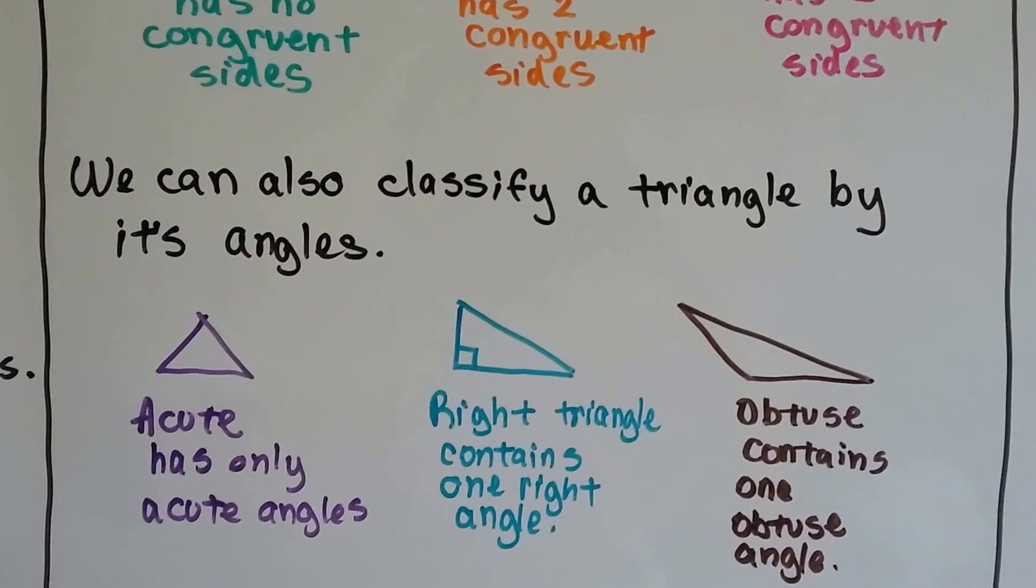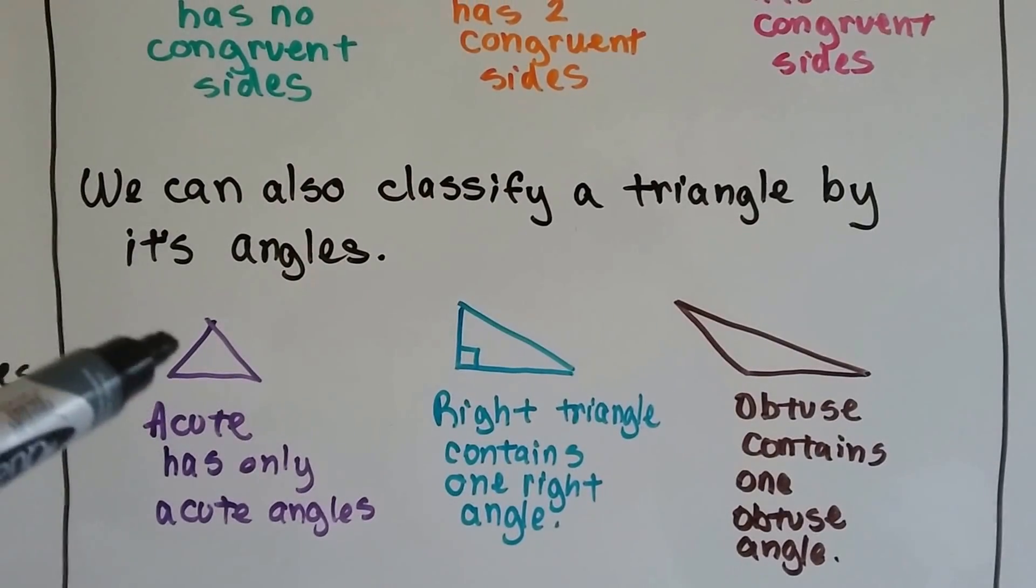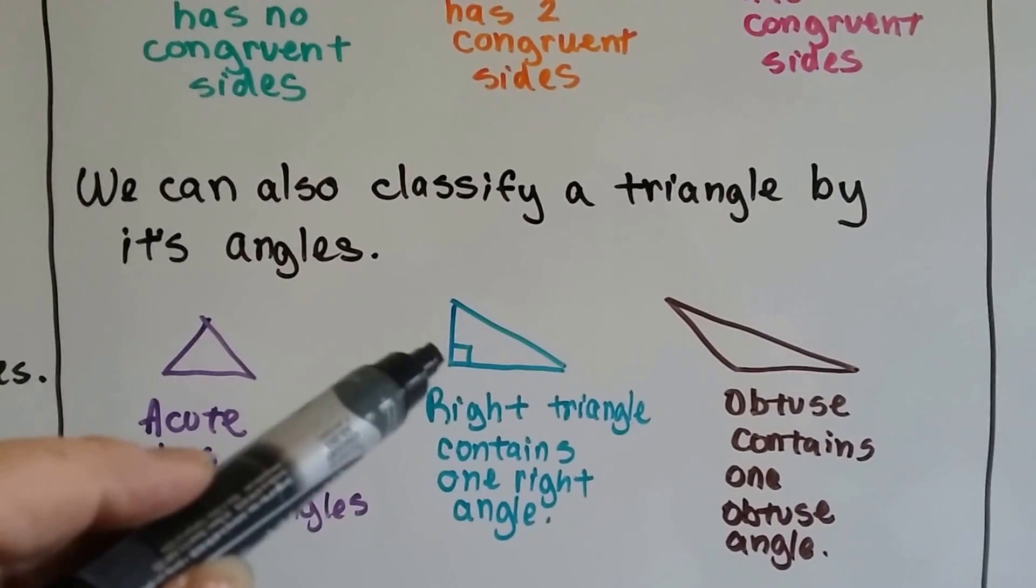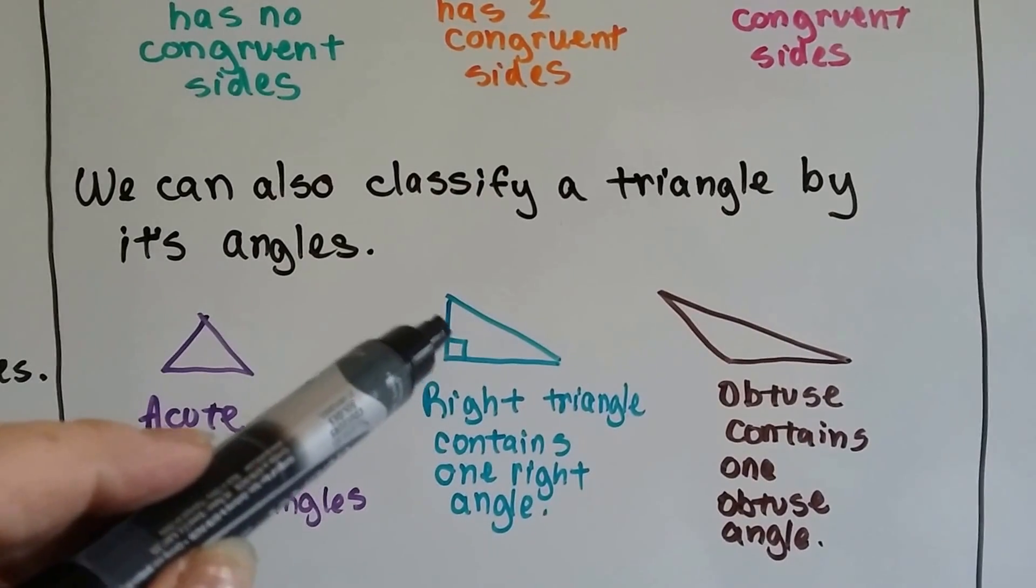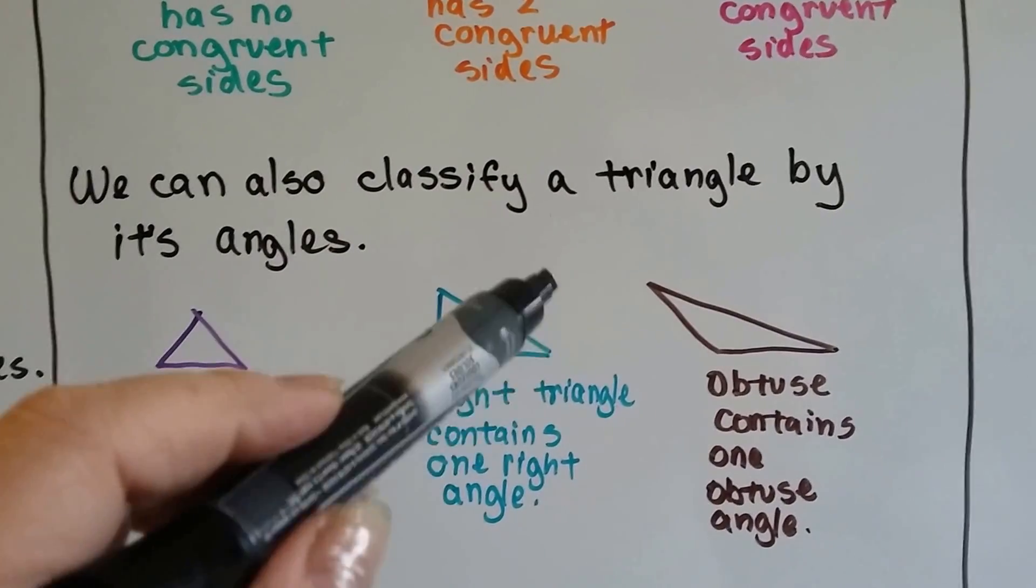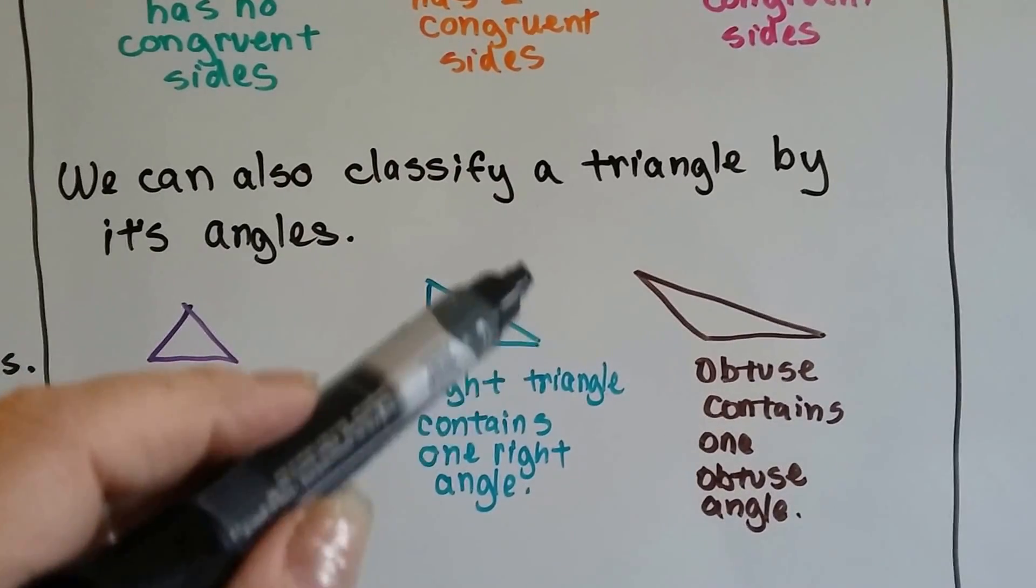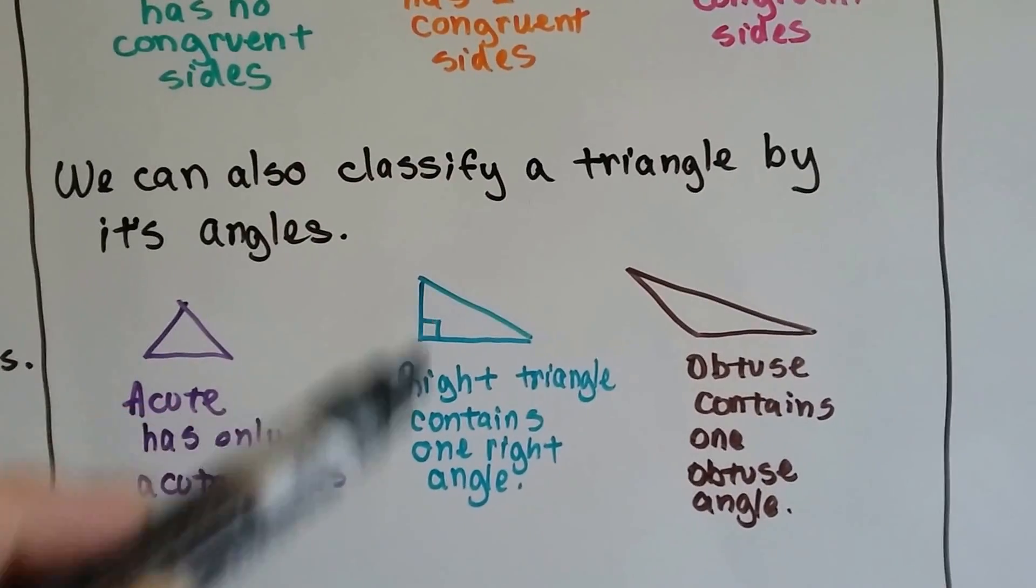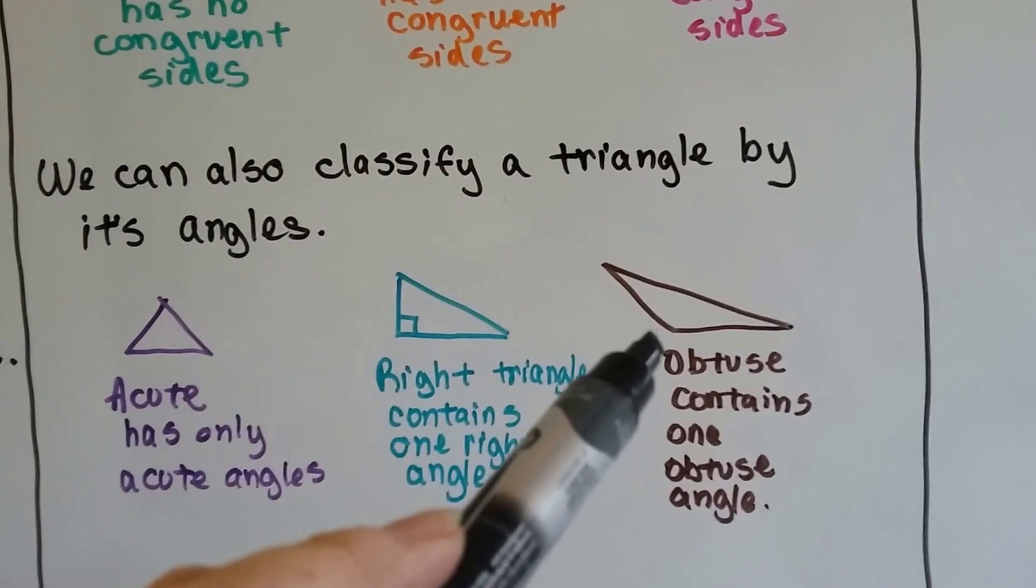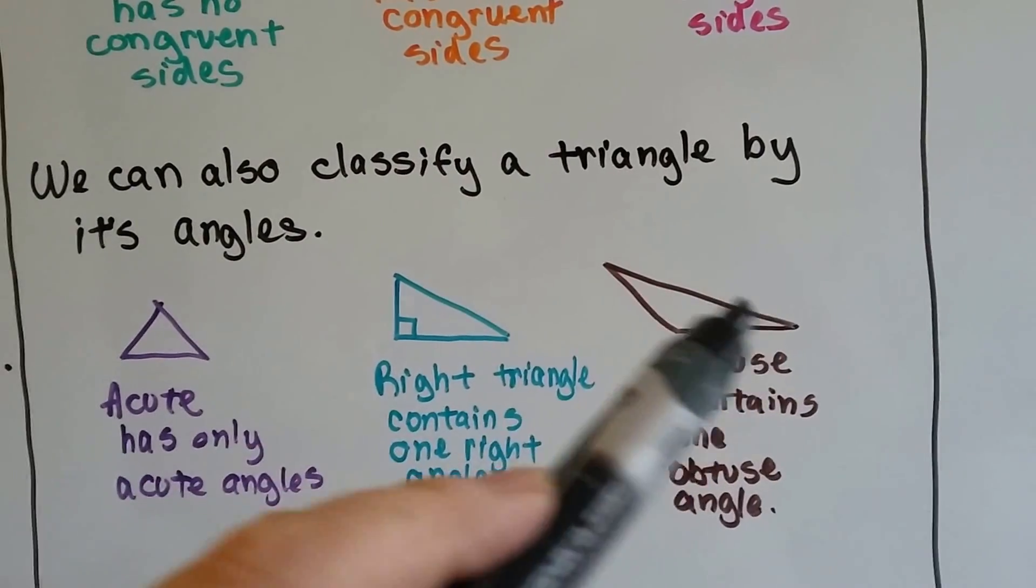We can also classify a triangle by its angles. If it only has acute angles, then it's an acute triangle. If there's a right angle, then it's a right triangle. See, it can't have two, because then it would be a box, wouldn't it? If it had two right angles? So it can only have one. And an obtuse contains one obtuse angle. One big one, and then two acute ones.